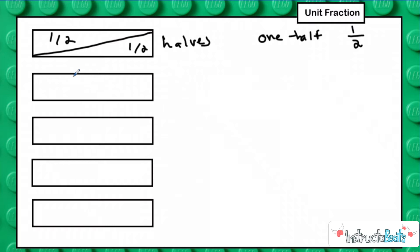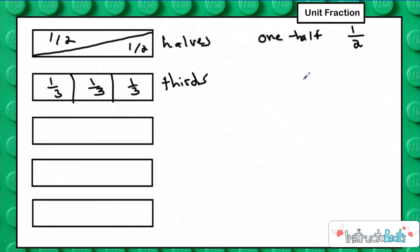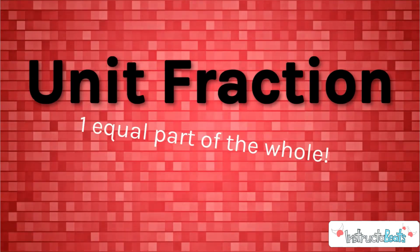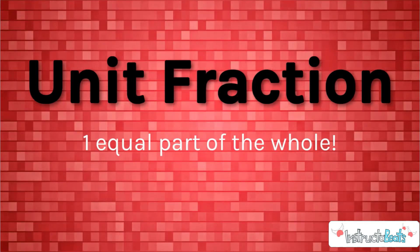The next fraction we typically work with is thirds. For the rest of the time I'll just split it up and down, but we could do diagonal if it makes equal groups. So we just split this into thirds, and each piece is going to be worth one out of three. Our unit fraction here is one third, and we write that as a fraction one out of three. The bottom part of our fraction, which we call the denominator, tells us how many equal pieces we have total, and we are talking about one out of those three pieces. We call that a unit fraction — how much one equal part of the whole is worth.